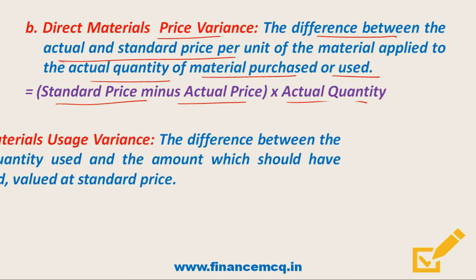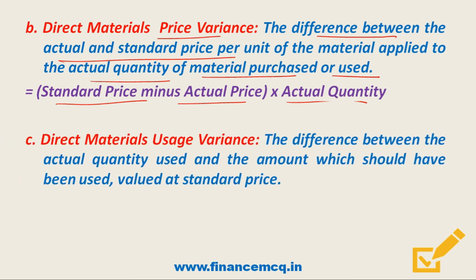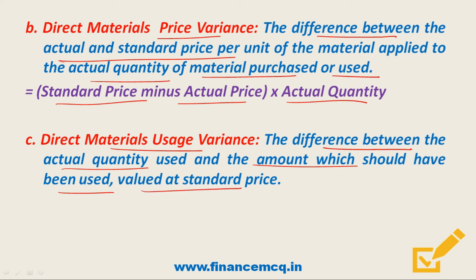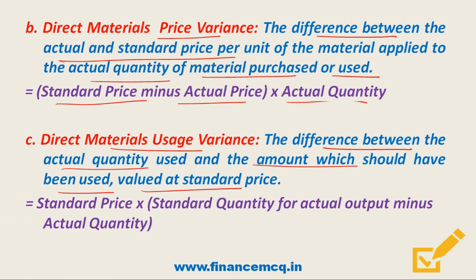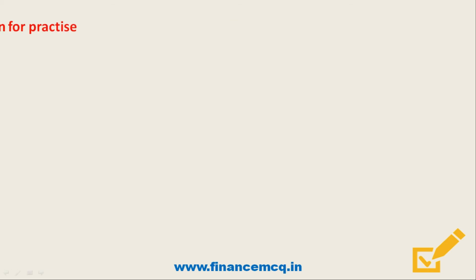The next type of variance is Direct Material Usage Variance. This is the difference between the actual quantity used and the amount that should have been used, valued at standard price. The formula is: Standard Price × (Standard Quantity for Actual Output minus Actual Quantity). Let's now look at a practical example.